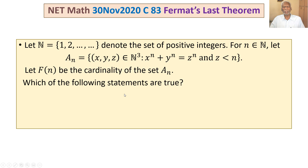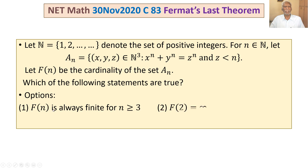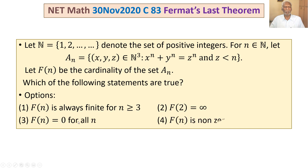Which of the following statements are true? Option 1: F(n) is always finite for n greater than or equal to 3. Option 2: F(2) is equal to infinity. Option 3: F(n) is equal to 0 for all n. Option 4: F(n) is non-zero for some n greater than 2.